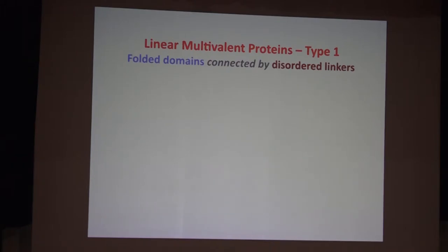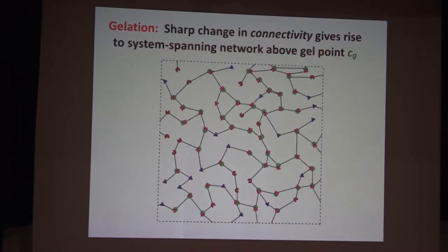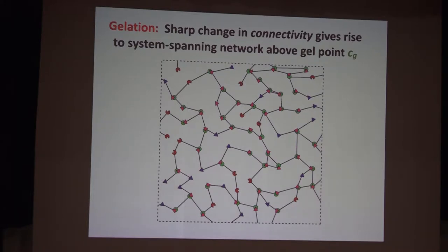The key issue is that we form a network of these interactions, and we mustn't lose sight of this because the underlying liquid has a structure defined by this network. The terms we'll use are associative polymers, stickers connected by spacers, and networks. I'll introduce you to a few archetypes of these stickers and spacers from nature — there are proteins that Mike Rosen popularized, which are basically folded domains connected by disordered linkers.